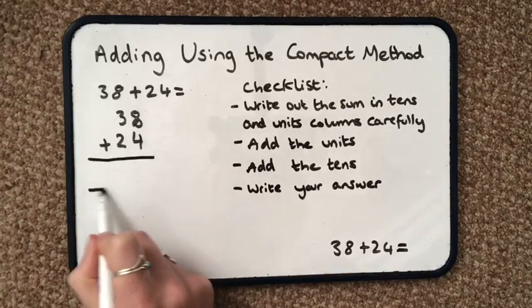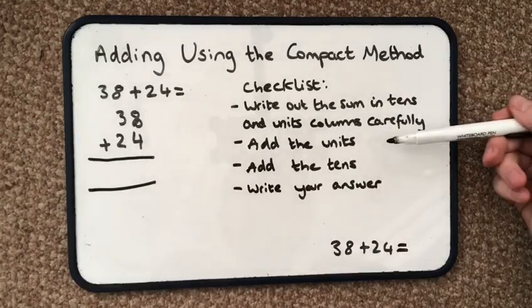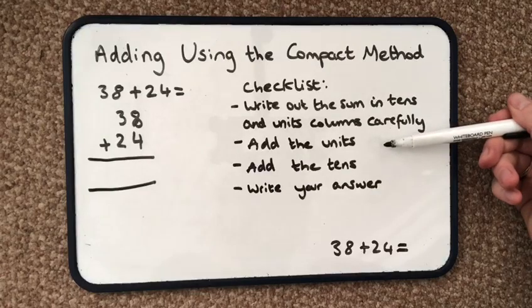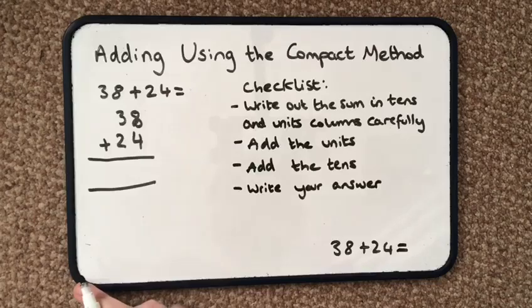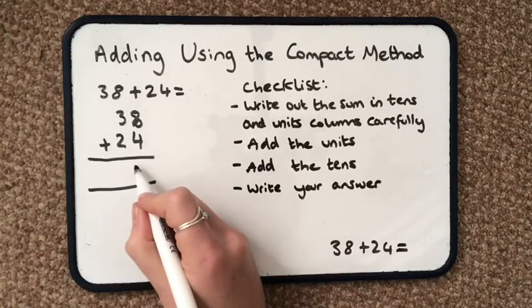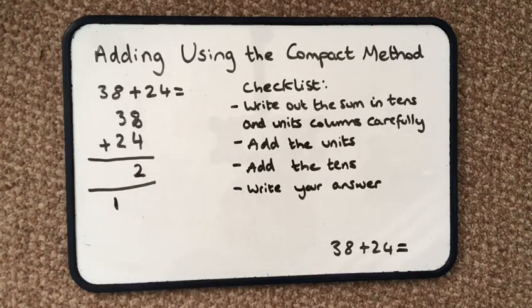I then write my equal sign to then go on to the next stage which is add the units. 8 plus 4 is 12. So I have two units in the answer and one 10. So I pass the 10 over to the tens column.